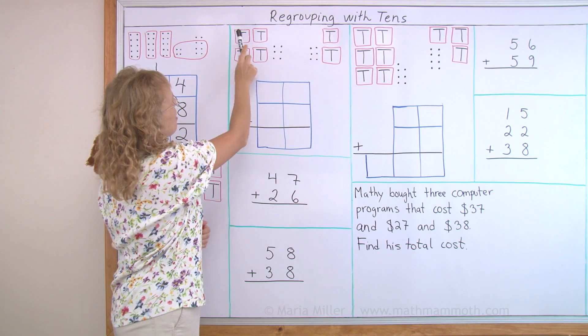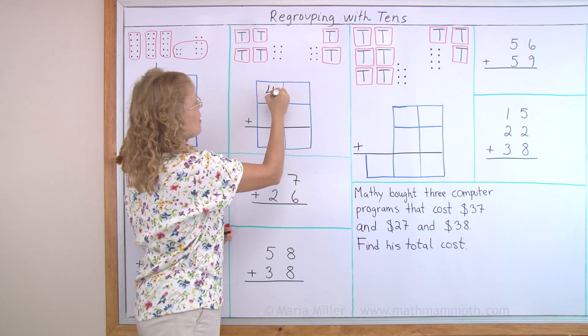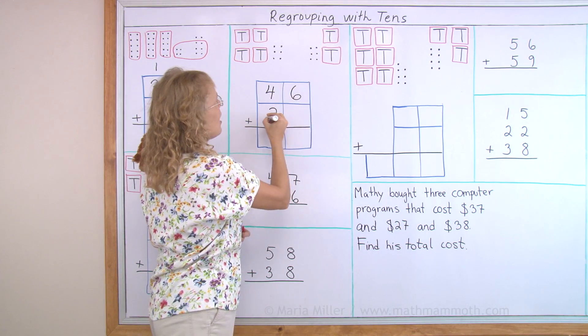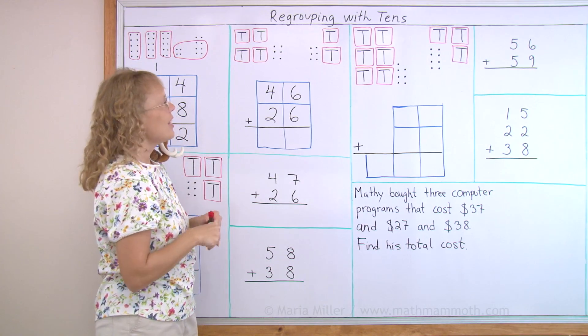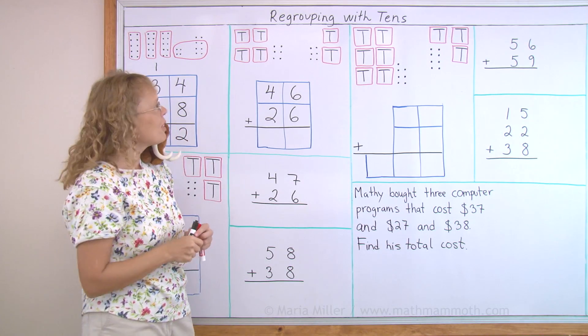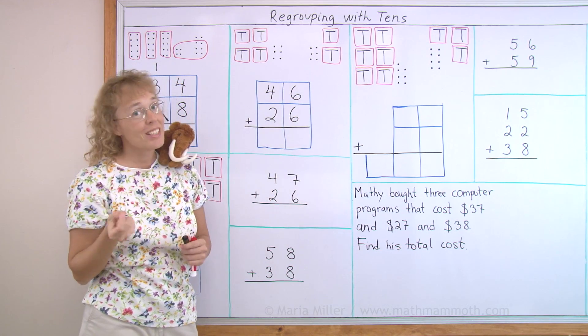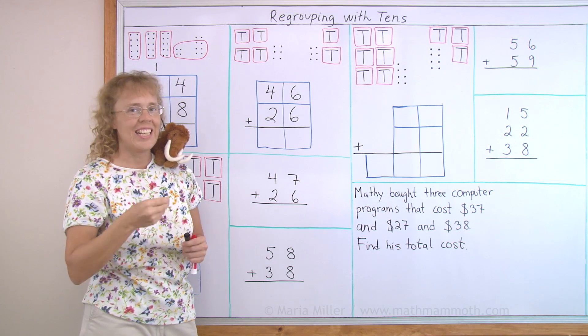Over here, my first number to add is forty-six. And the second number has two tens and six ones, twenty-six. And now when we start adding, we first look at the ones, these dots here, six and six. Again, that makes twelve. Six plus six equals twelve, which is one ten and two.